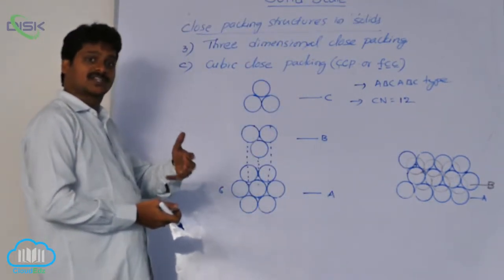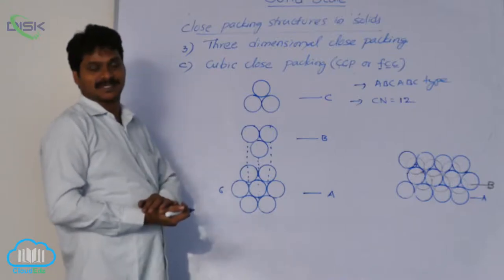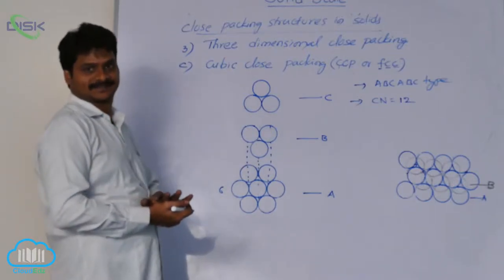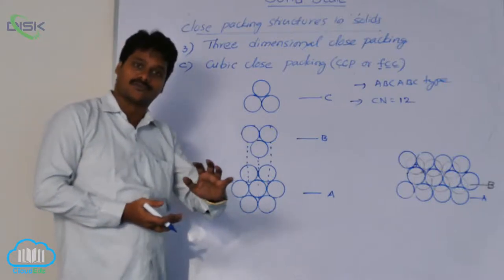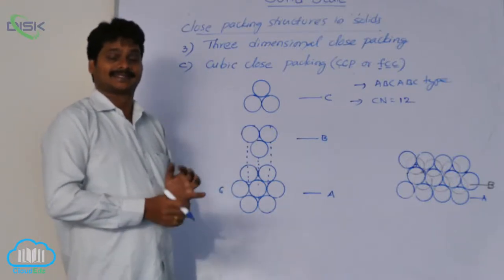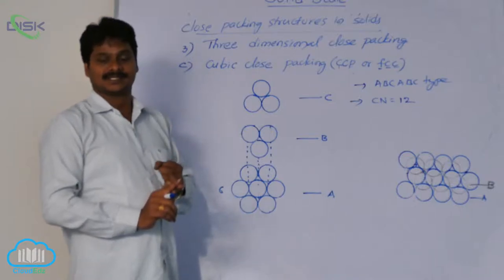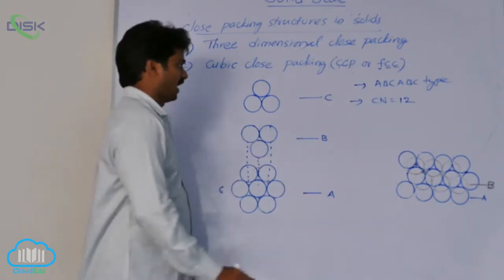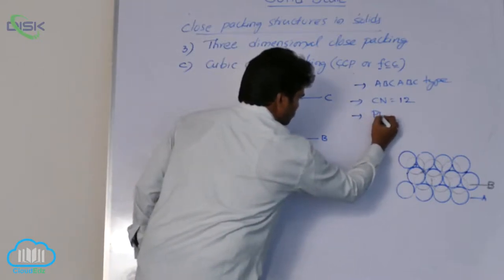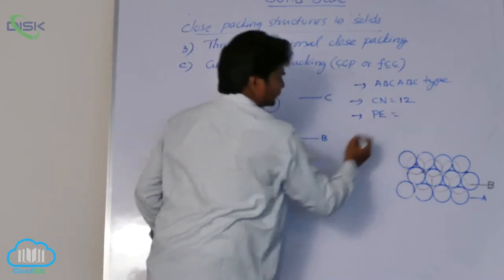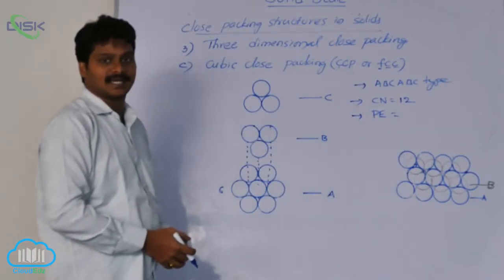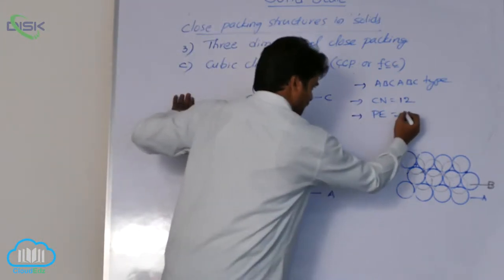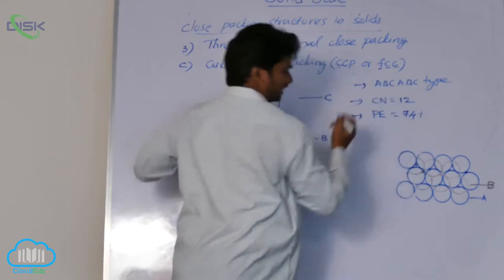As the coordination number is higher in HCP and CCP, these are more common structures for solids. HCP and CCP are more common because the coordination number is 12. The packing efficiency in CCP is the same as in HCP, that is 74%.